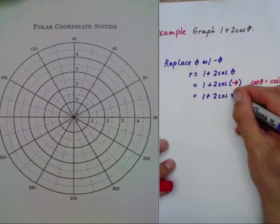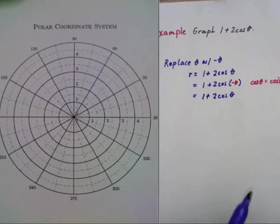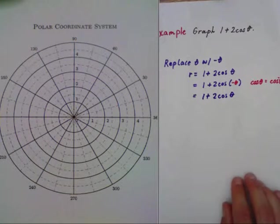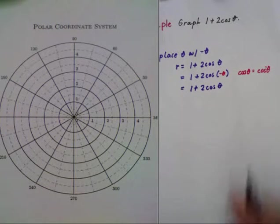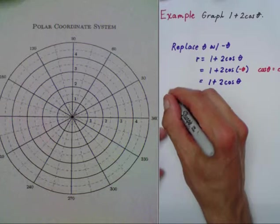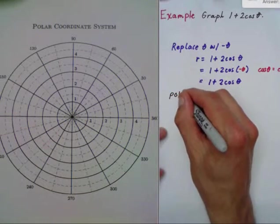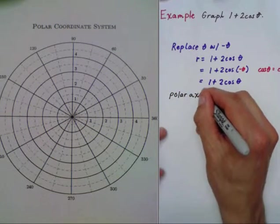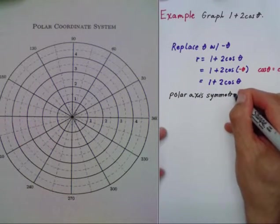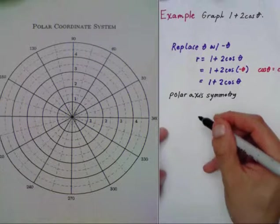That's important because when I graph this, I don't have to do such a large table and plot all these extra additional points. Now that I know this has polar axis symmetry, I only have to graph a certain amount of points and then I can graph the rest of them.